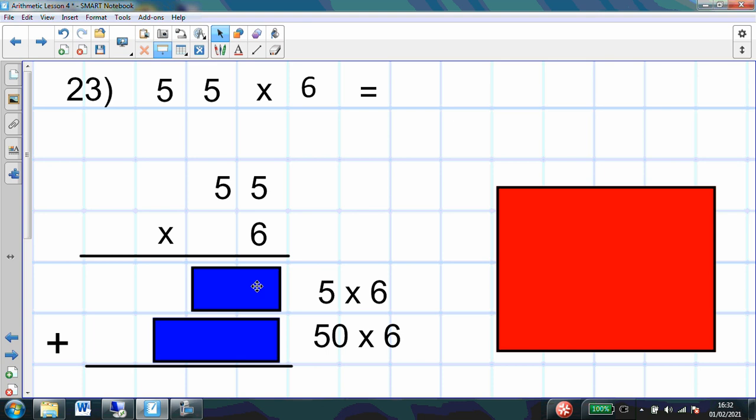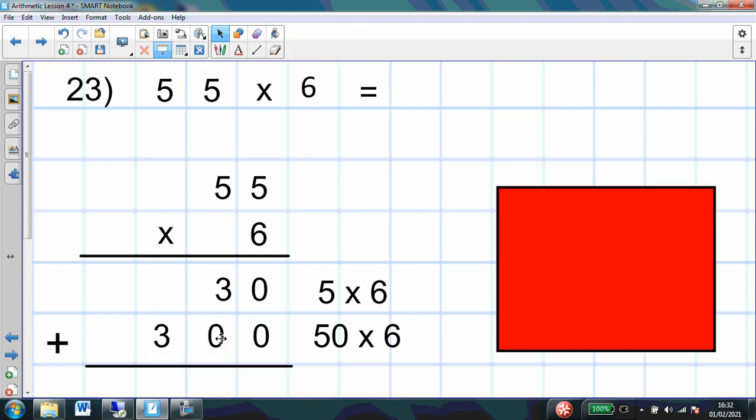5 times 6. 5, 10, 15, 20, 25, 30. How could I use this to help me work out 50 times 6? Now I can see it's just 10 times bigger. 10 times bigger. That's going to be 300. So 5 times 6 is 30. 50 times 6 is 300. And then of course, just like on our last question, we just need to add these two together.